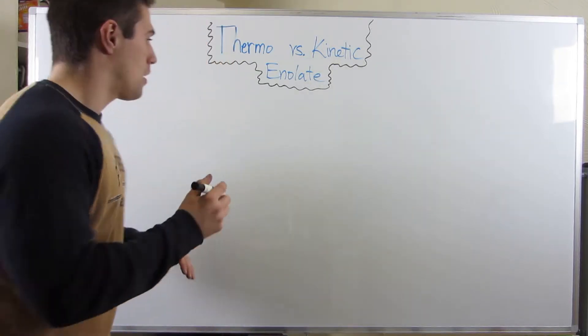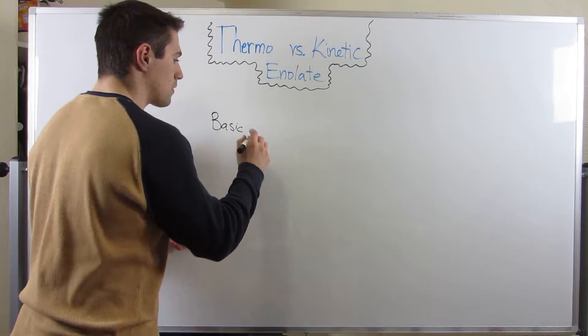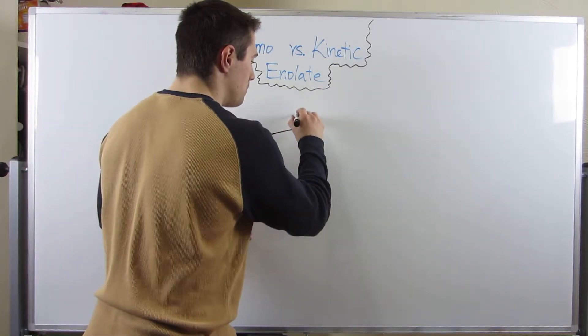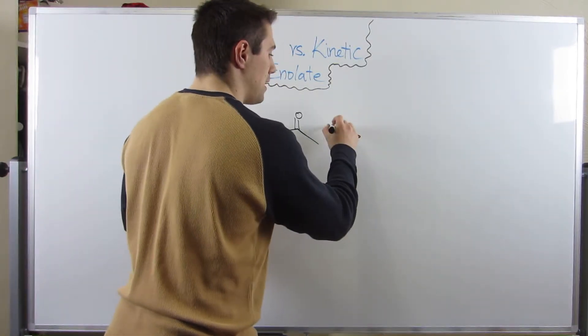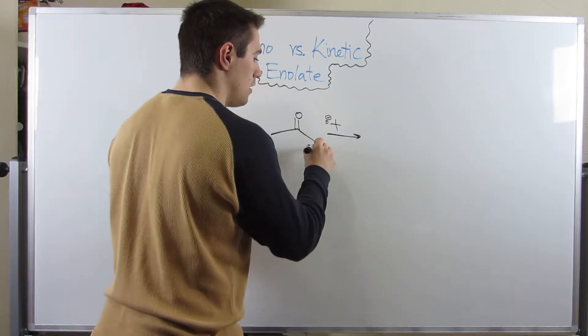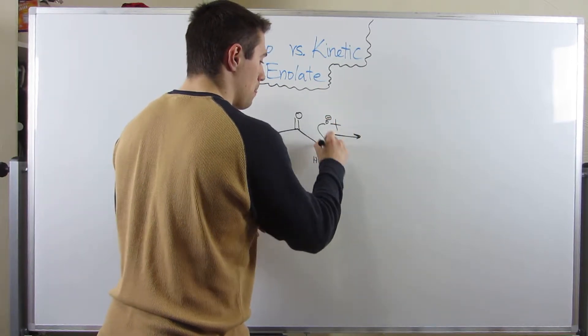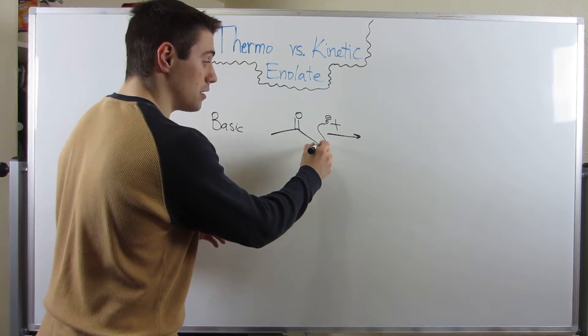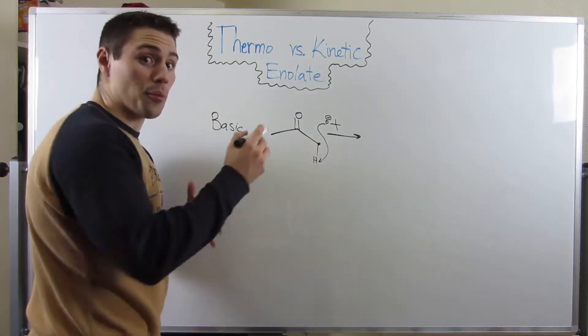Just a quick review. Remember, in basic environments, if we have a generic carbonyl and throw some base in there, like T-butoxide, we deprotonate the alpha carbon. The base snatches up the alpha proton.